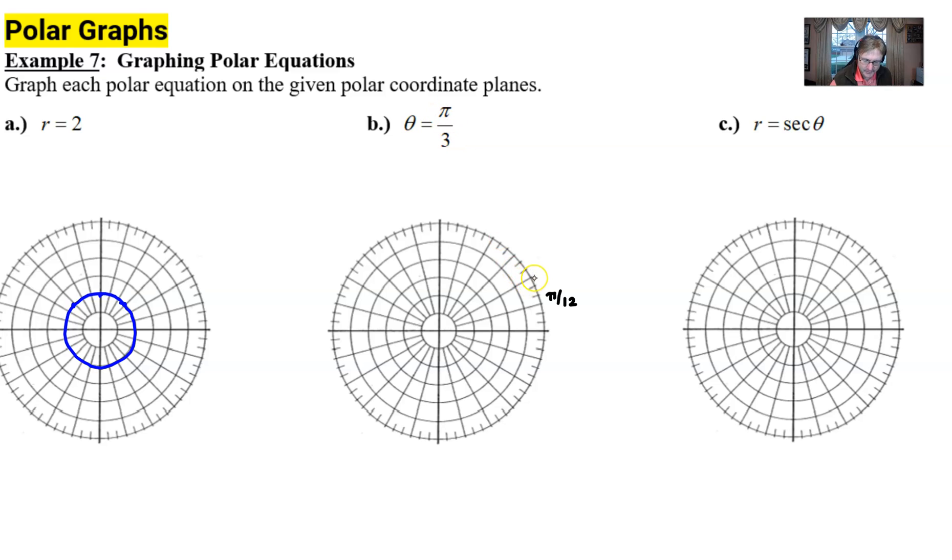So pi over 3 would be 1, 2, 3, 4 pi over 12, which is this spoke right here. I'm going to delete this one so we don't get confused.